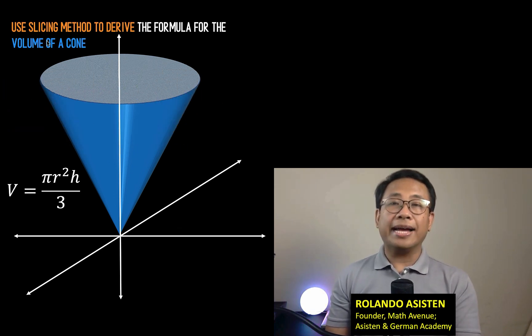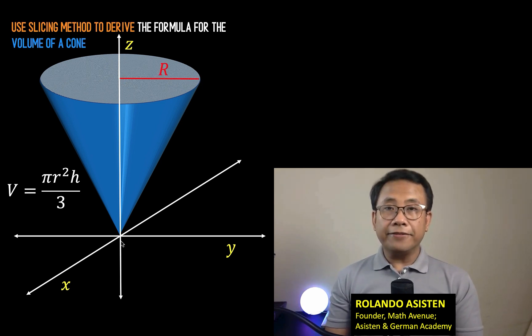We are going to use a calculus method called the slicing method in order to derive the formula using definite integration. So let's label the axes: this is the x-axis, this is the y-axis, and the vertical axis is our z-axis. Then, let's locate the center of the circular cone and from the center, let's draw its radius and label it as capital R. Then, from the vertex, let's draw the height and label it as capital H.